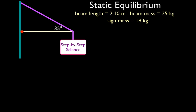We have the Step-by-Step Science sign, which has a mass of 18 kilograms, supported by a cable which makes an angle of 35 degrees with the beam. The beam has a length of 2.1 meters and a mass of 25 kilograms. It's supported by the wall and the cable, and the beam is attached to the wall by a hinge. We want to find the tension force in the cable and the force from the hinge.